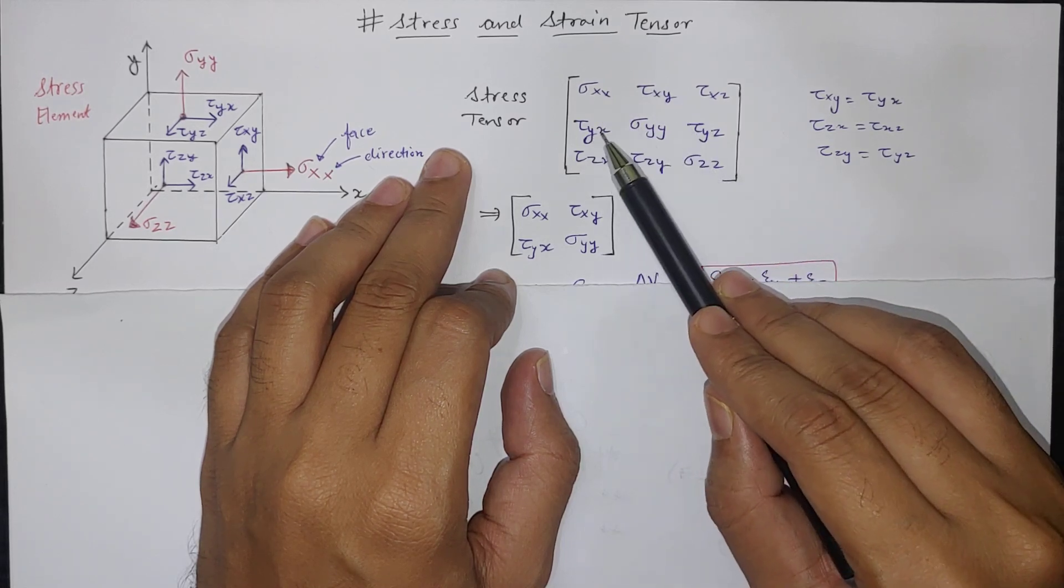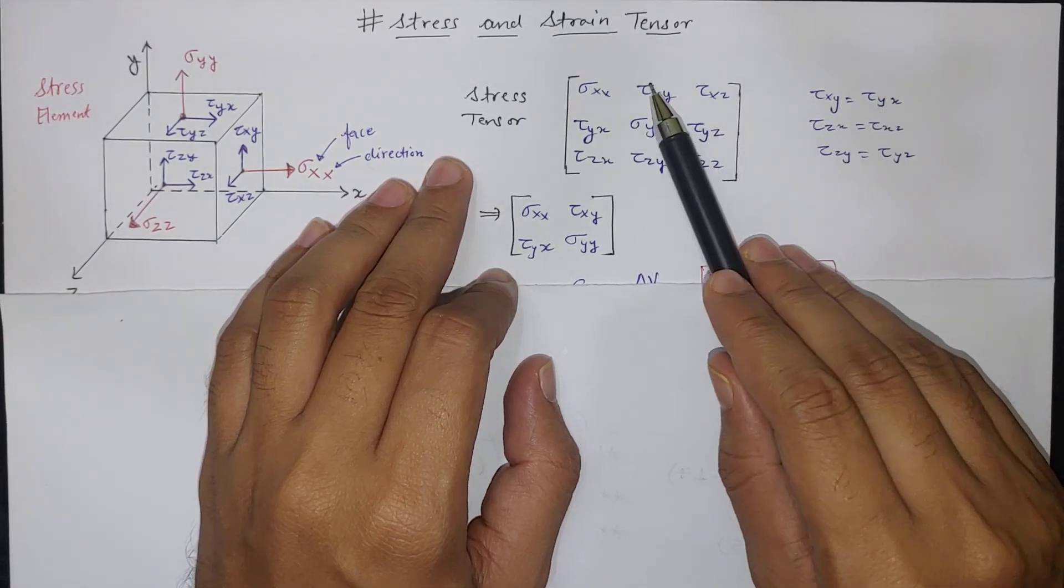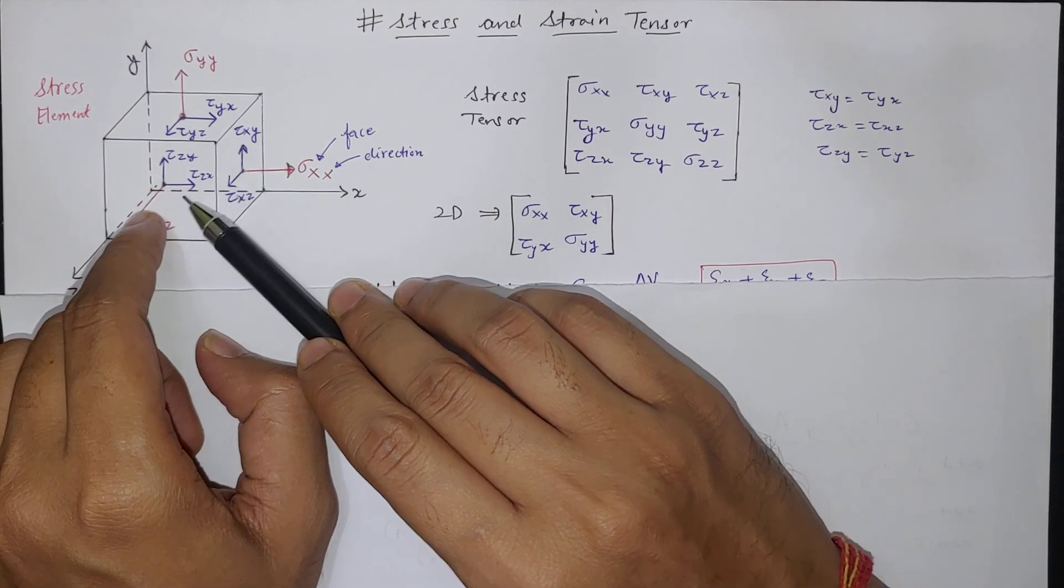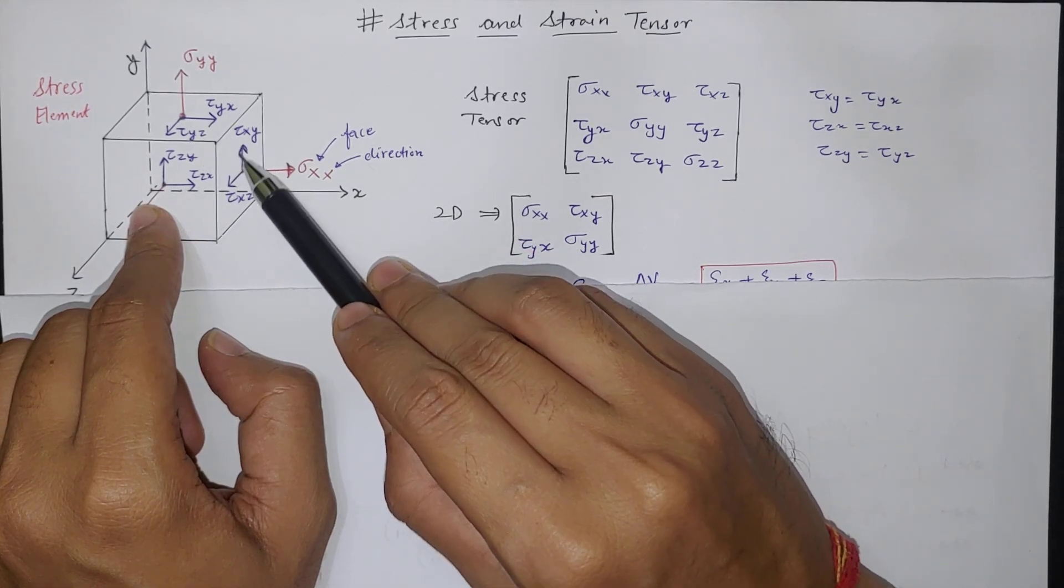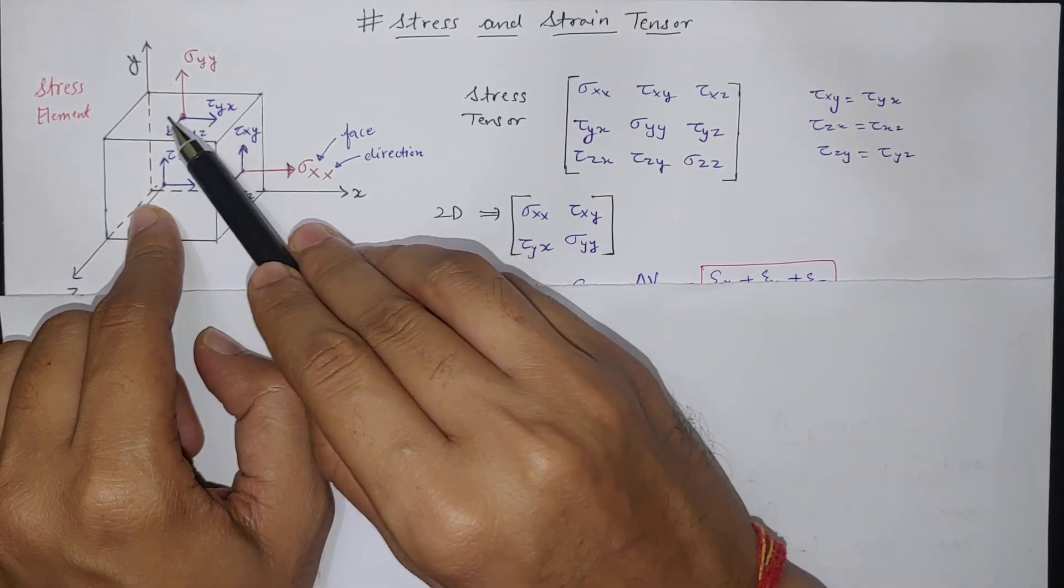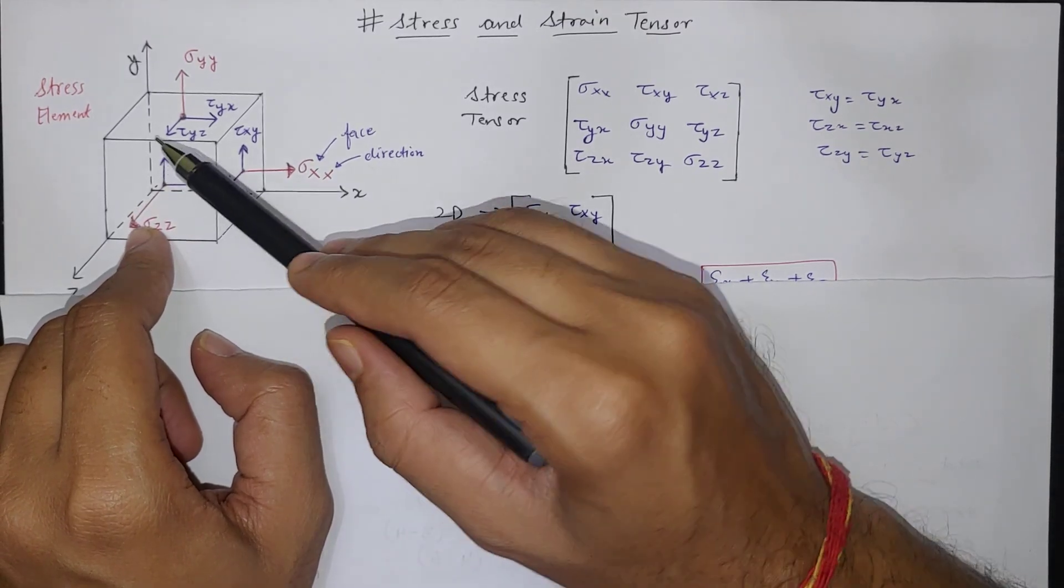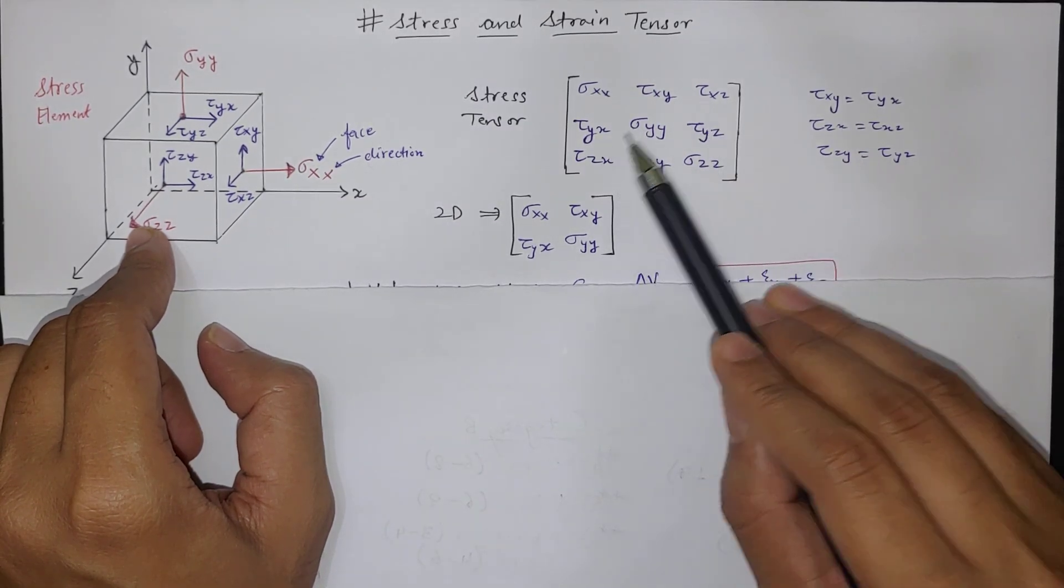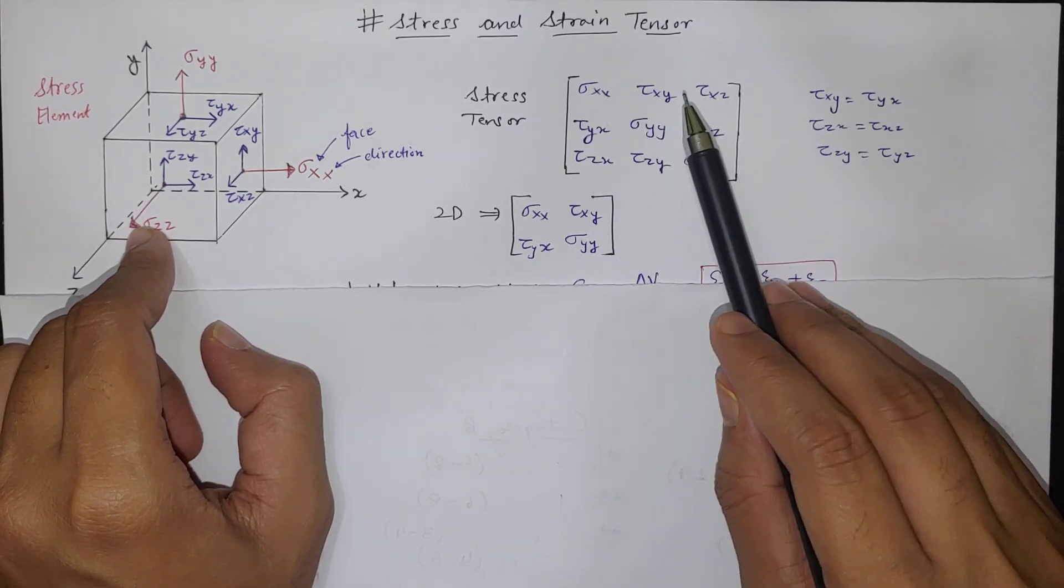So here tau XY and tau YX both are there. So both will be equal because both are complementary. So for the body to remain in static position both are to be in complementary direction. So one stress is acting in this direction, the other has to act in this direction. So likewise all are having complementary shear stresses. So these two will be equal and these two will be equal. So like that we are having six different values.